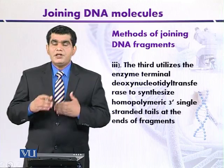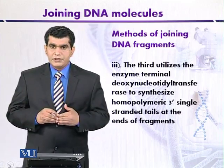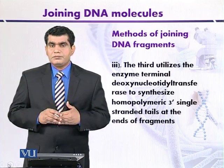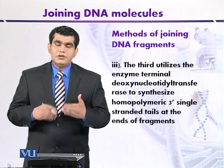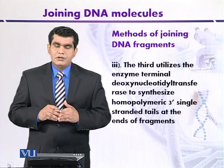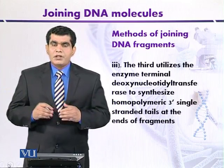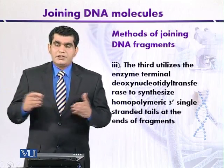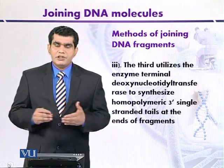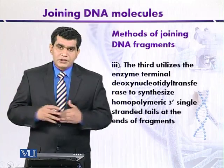The third method depends on the ability of terminal deoxynucleotidyl transferase, commonly called terminal transferase. This enzyme introduces homopolymer tails at the 3' ends of the DNA fragment. Homopolymer tailing means the tails contain a single type of residue at the 3' ends — for example, either adenine, guanine, cytosine, or thymine. How this is possible will be discussed after some time.